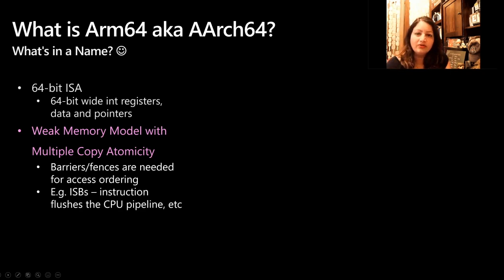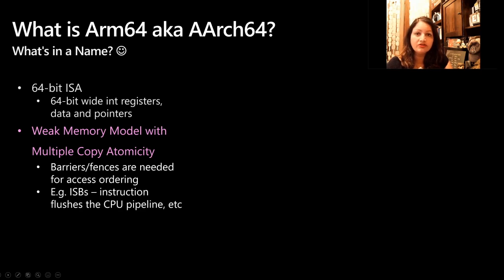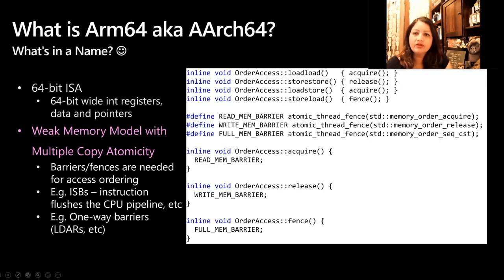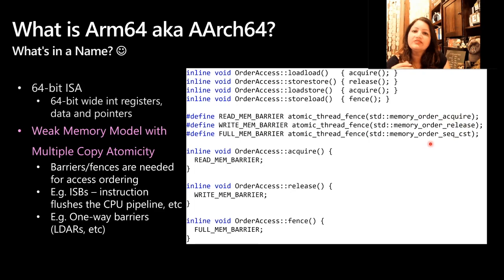The other thing I wanted to highlight about ARM64 is the release consistency model, which means it provides one-way barriers such as load-acquire and store-release. So it's kind of an optimization. Here you see a code snippet from our code base where we're trying to provide ordered access. You can see load-acquire, store-release, and then sequential consistency. To read more about sequential consistency, please look up the ARMv8 ISA.